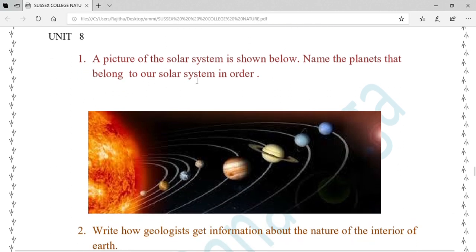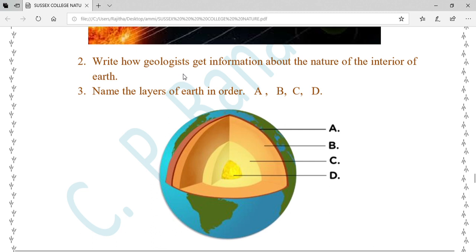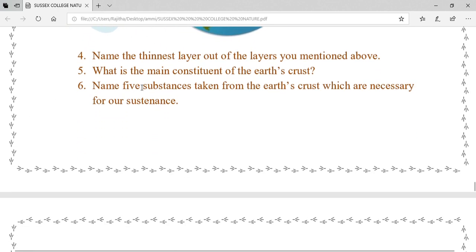The picture of the solar system is shown below. Name the planets that belong to our solar system in order. Number two: Write how geologists get information about the nature of the interior of earth. Question number three: Name the layers of earth in order: a, b, c, d. Number four: Name the thinnest layer of the layers you mentioned above. Number five: What is the main constituent of the earth's crust? Number six: Name five substances taken from the earth's crust which are necessary for our sustenance.